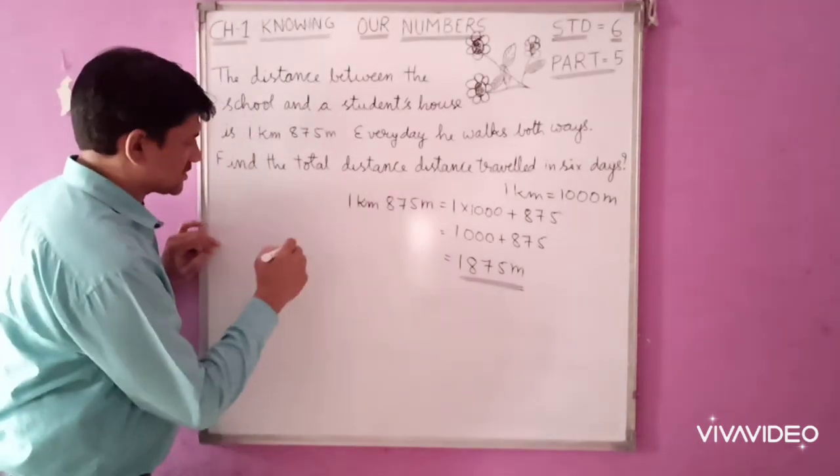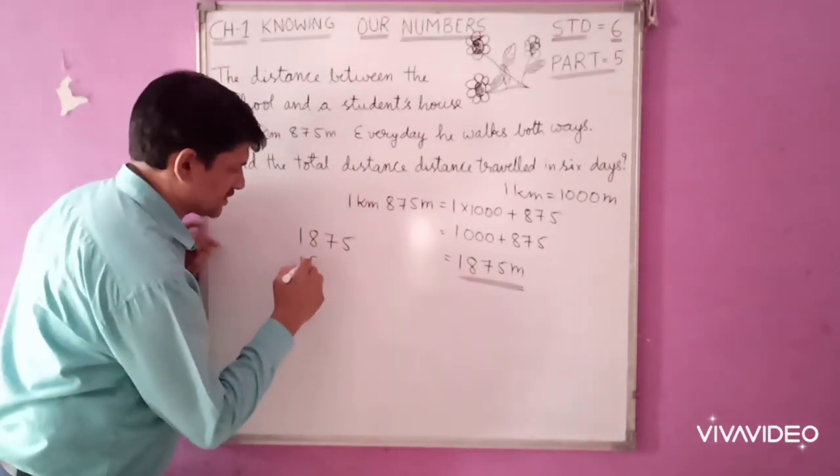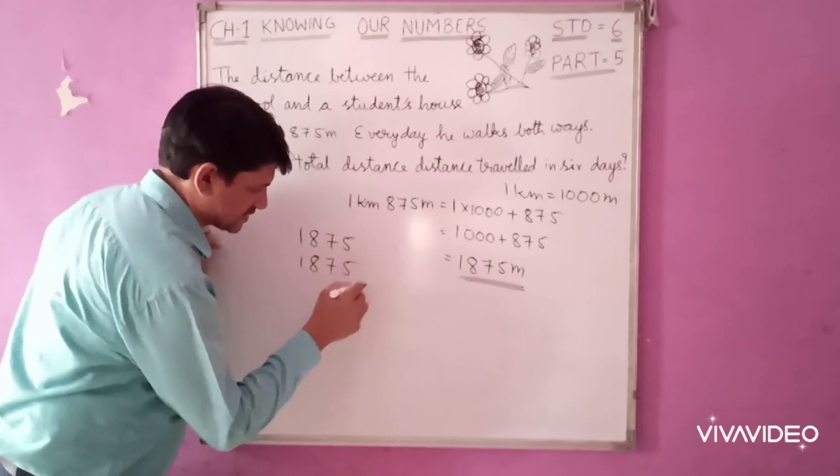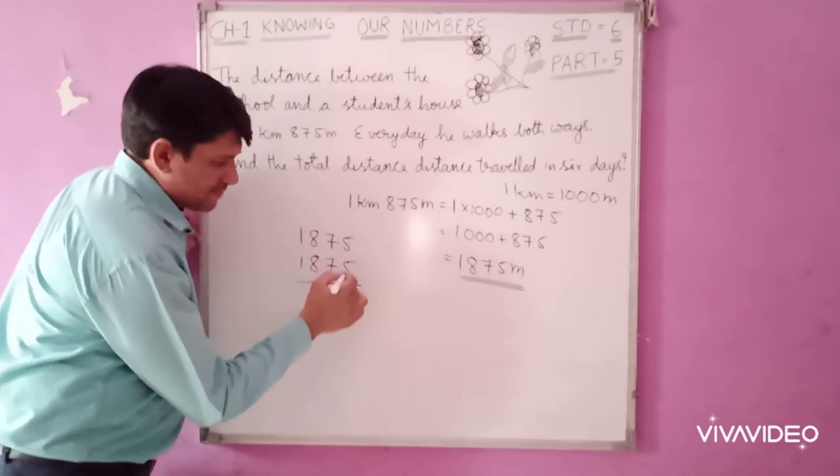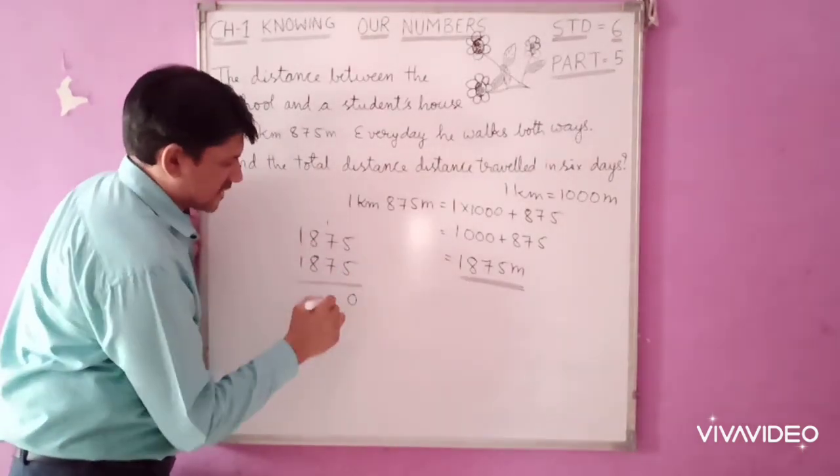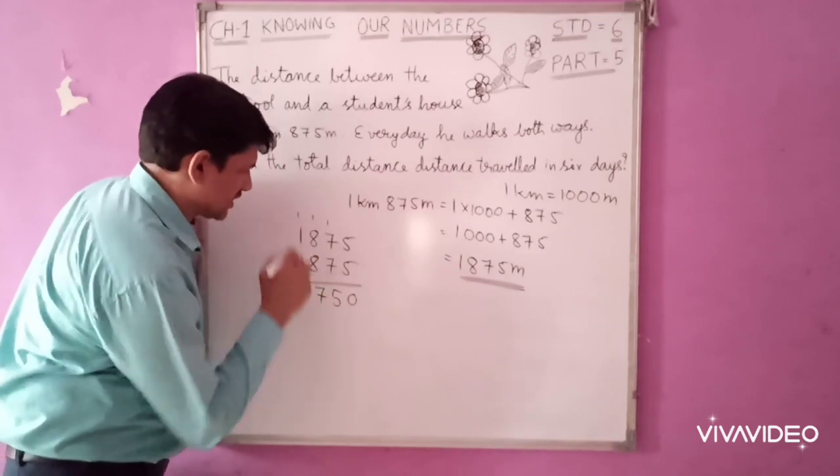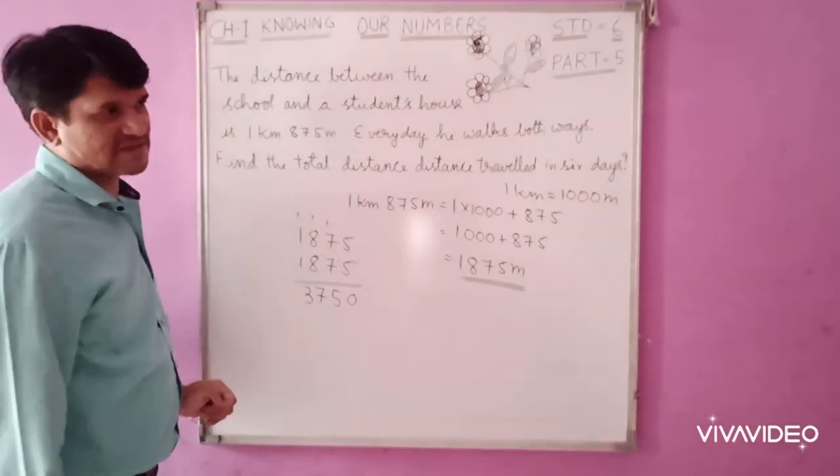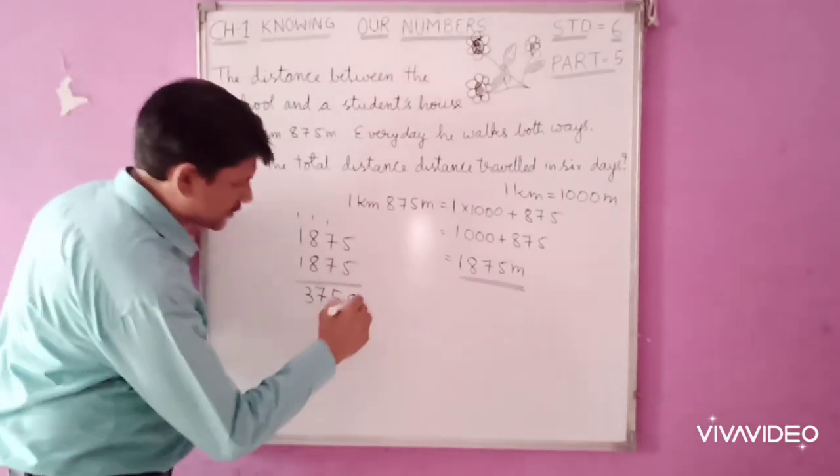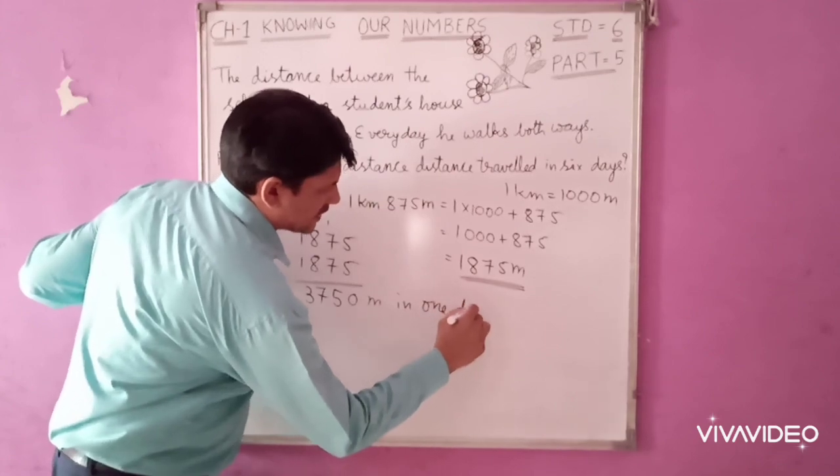Both ways: 1875 plus 1875. Add this: 5 plus 5 is 0, carry 1. 7 plus 7 plus 1 is 15, carry 1. 8 plus 8 plus 1 is 17, carry 1. 1 plus 1 plus 1 is 3. So he totally walks 3750 meters in one day.